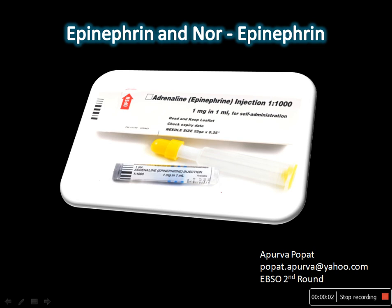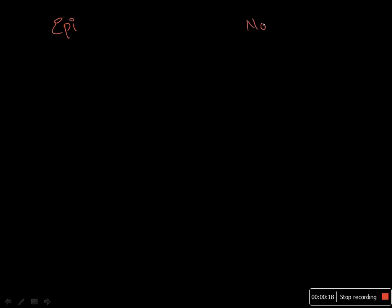In this video we are going to look at the difference between epinephrine and norepinephrine. This video is prepared for the second round of Elsevier. The name itself suggests the difference: norepinephrine means there is no methyl group, and in epinephrine there is presence of a methyl group.